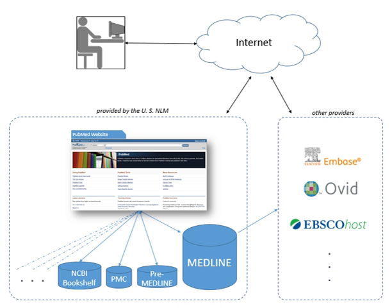PubMed records contain links to full-text articles, some of which are freely available, often in PubMed Central and local mirrors such as UK PubMed Central. Information about the journals indexed in MEDLINE and available through PubMed is found in the NLM catalogue. As of 6 December 2018, PubMed has more than 29.1 million records going back to 1966, selectively to the year 1865, and very selectively to 1809. About 500,000 new records are added each year. 13.1 million records are listed with their abstracts, and 14.2 million articles have links to full-text, of which 3.8 million articles are available full-text for free.